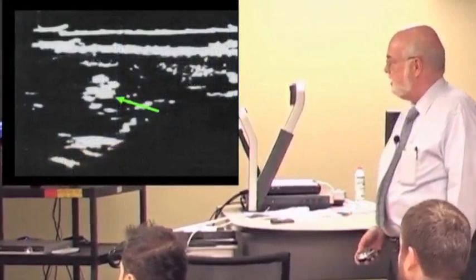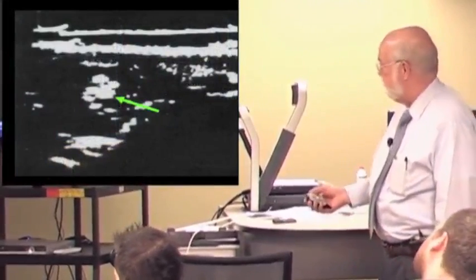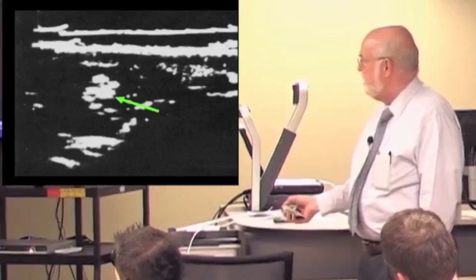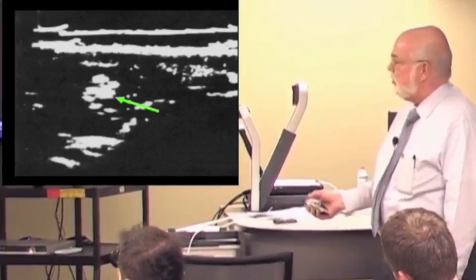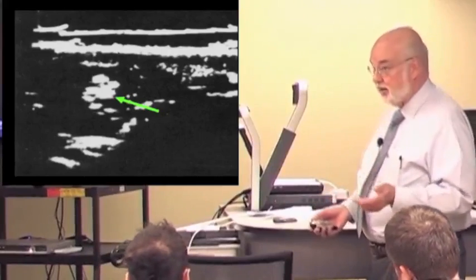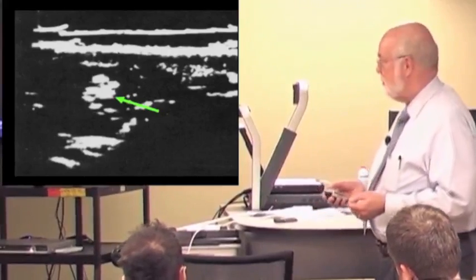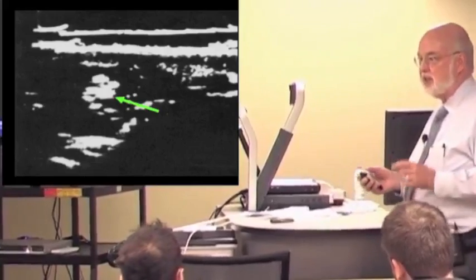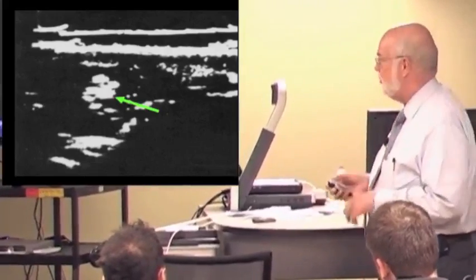This was an early ultrasound. That's early pregnancy where the green arrow is pointing to the fetus. This display is black or white. There's no shades of gray. So it was called bi-stable, either on or off. And it was on an oscilloscope. If you wanted a permanent picture, you had to take a picture of the oscilloscope with a Polaroid camera.